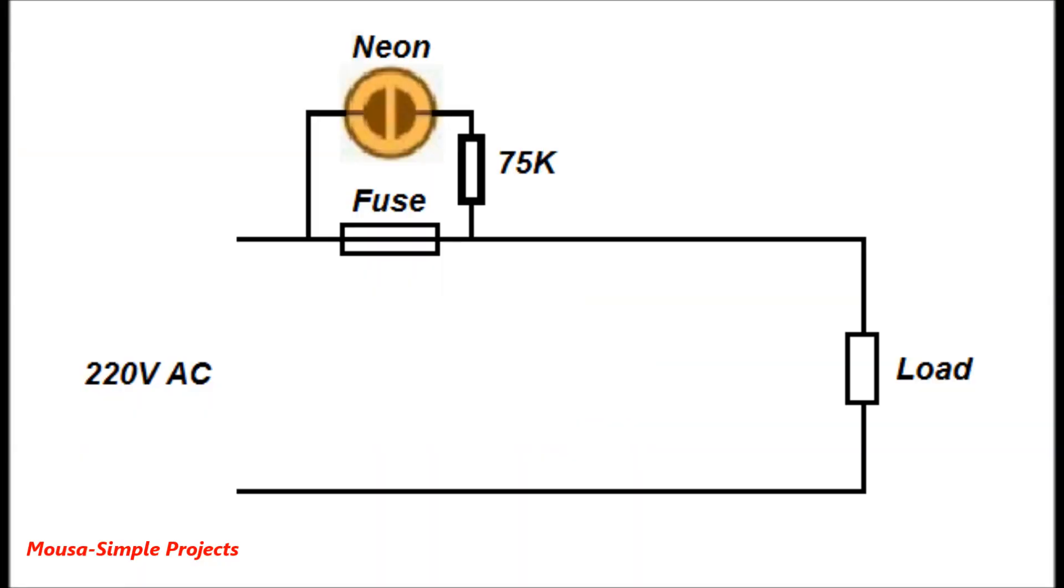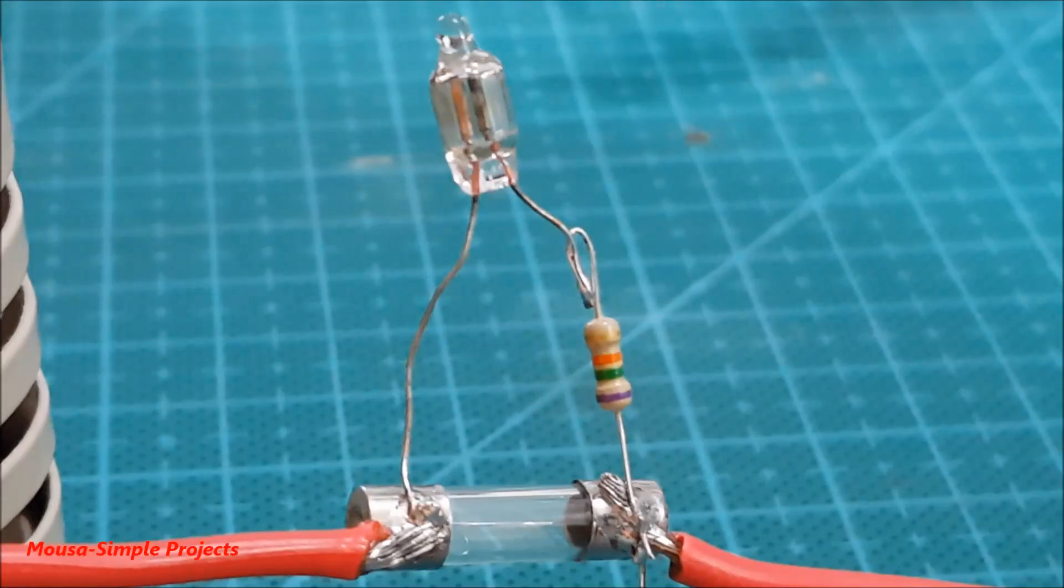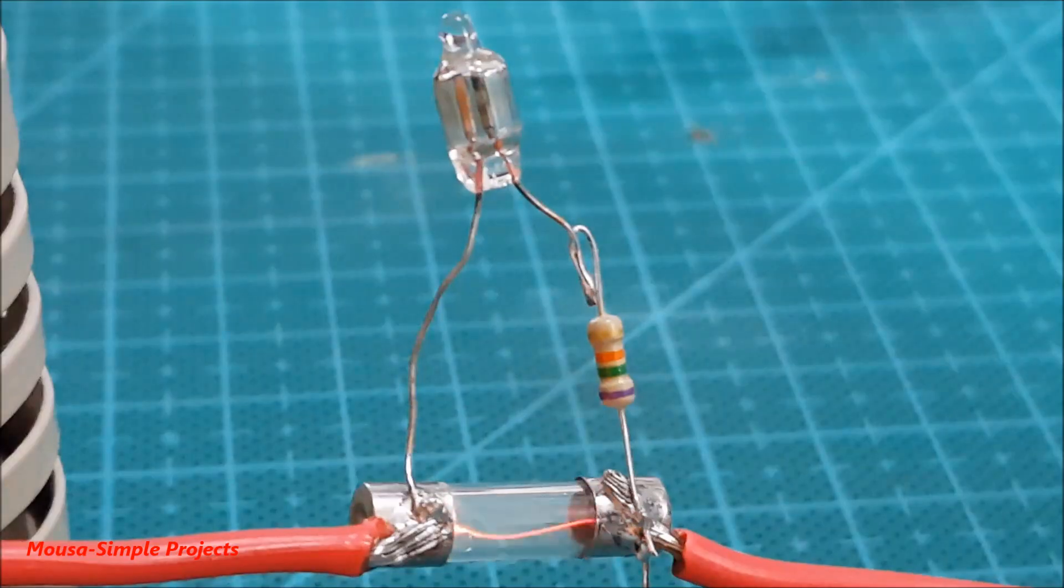The last application of neon lamp is blown fuse indicator. In this case, we connect a neon lamp in parallel with the fuse. The voltage across the fuse is 0V, but when it is blown, the voltage across it increases and the neon lamp glows.